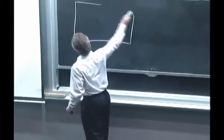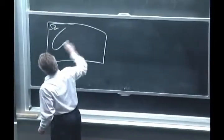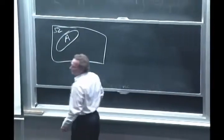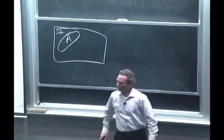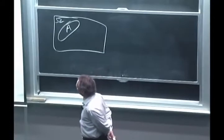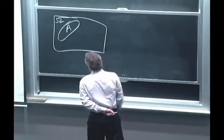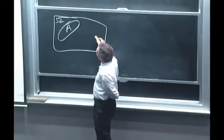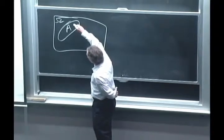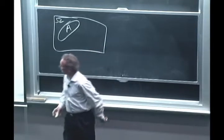So as we have our sample space here, we may have a subset A, and we assign a number to that subset, P of A, which is the probability that this event happens. Or this is the probability that when we do the experiment and we get an outcome, it's the probability that the outcome happens to fall inside that event.